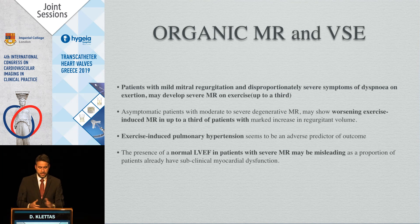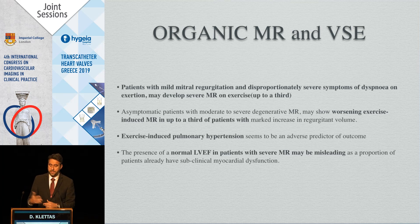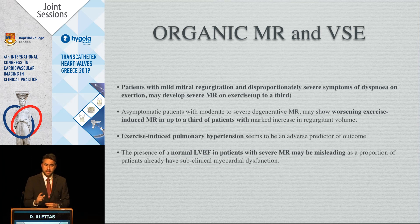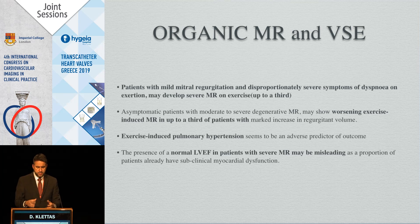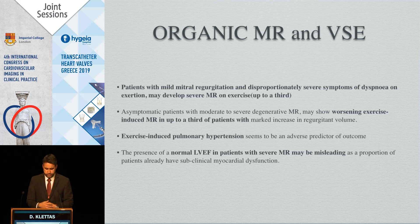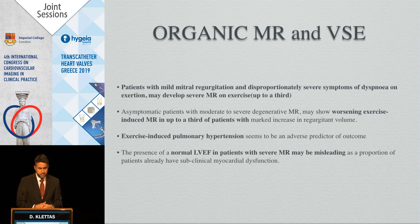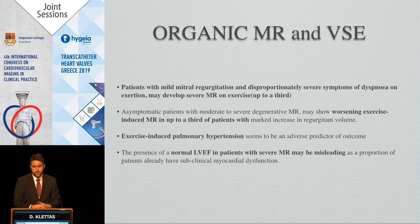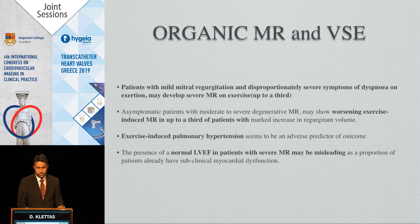Regarding organic MR and valve stress echo: in patients with mild mitral regurgitation and disproportionately severe symptoms, one-third develop severe MR on exercise echo. Asymptomatic patients with moderate to severe degenerative MR — up to one-third show marked increase in regurgitant volume with exercise. Exercise-induced pulmonary hypertension appears to be an adverse prognostic outcome, and the presence of normal ejection fraction in patients with severe MR may be misleading, as we know from physiology.